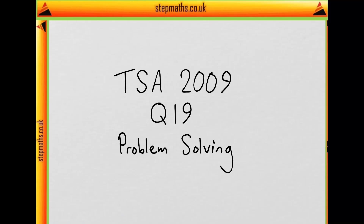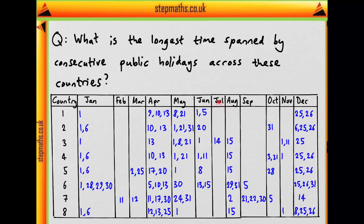This is question 19 on problem solving from the 2009 TSA. We're asked what is the longest time spanned by consecutive public holidays across these eight countries. Given are the dates of any public holidays each month in each of these countries. What we're looking for in this table is the largest number of consecutive dates shown across these eight countries.